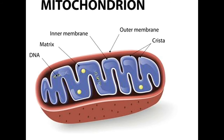Deciding whether a property is a symplesiomorphy or a synapomorphy depends on the groups involved and their position on the evolutionary tree. For this reason, symplesiomorphies can be synapomorphies, and vice versa. For instance, in the above example about mitochondria, if the whole group of eukaryotes is considered, this property is a synapomorphy, since it first evolved in and is restricted to this group alone. However, because plants and animals evolved relatively late, it is a symplesiomorphy for them.